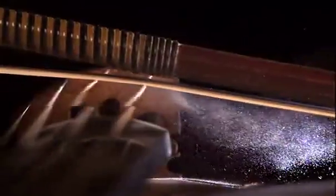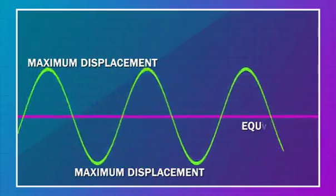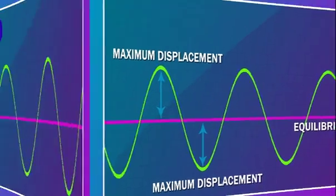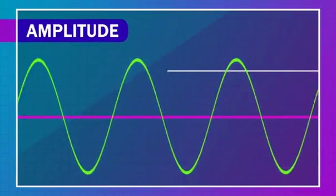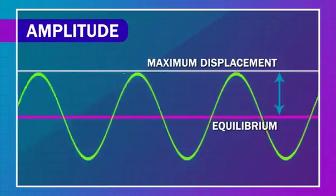The maximum distance, or displacement, of the string and air particles to one side of the equilibrium point is equal to the maximum displacement of the string and particles on the other side. The distance between equilibrium and maximum displacement is called the amplitude.